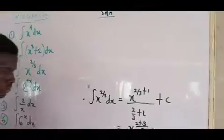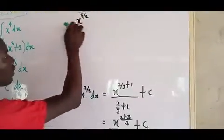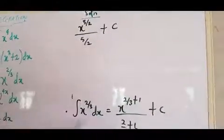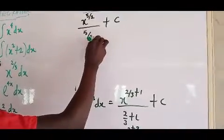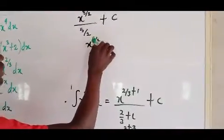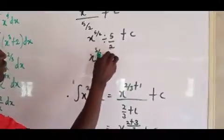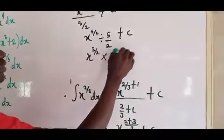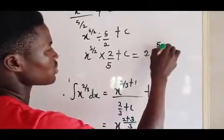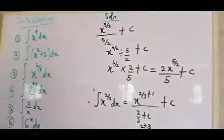Adding those together: 2 plus 3 is 5, so we get x to the power 5/3 over 5/3 plus c. You can leave the answer this way, or simplify: dividing by 5/3 is the same as multiplying by 3/5, giving 3x to the power 5/3 over 5 plus c. That is the final answer for the third question.